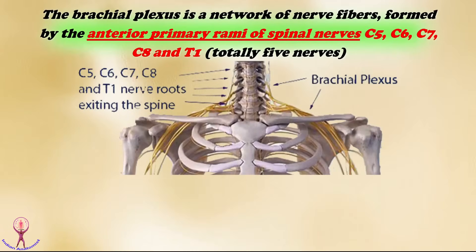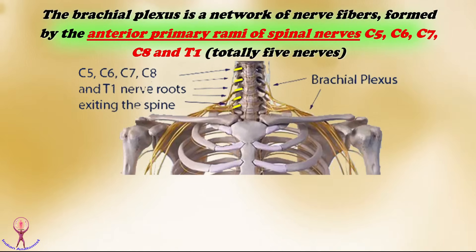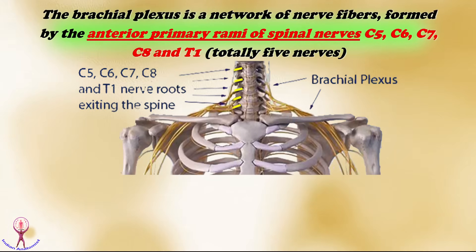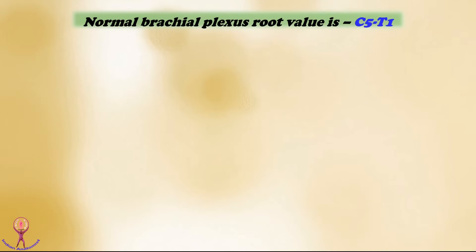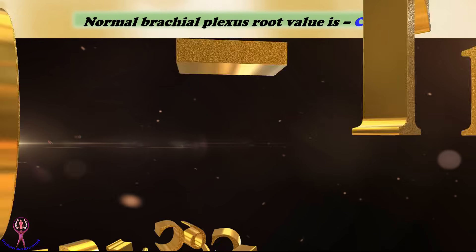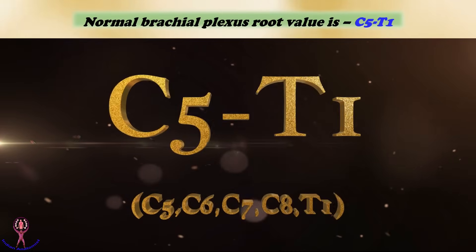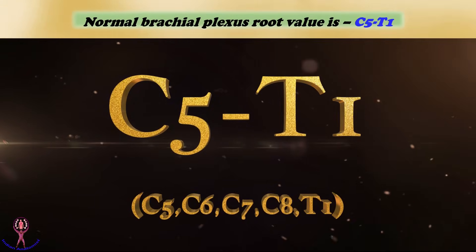The anterior primary rami of spinal nerves C5, C6, C7, C8, and T1 — a total of 5 nerves — join together to form the brachial plexus, which extends from the neck to the shoulder. The brachial plexus provides nerve impulses to the skin, muscles, and joints of the upper limb. The formation of the brachial plexus can vary slightly from person to person. It is made up of the roots C5 to T1.